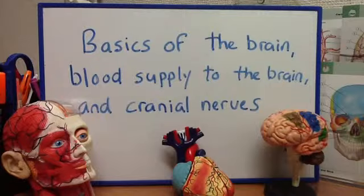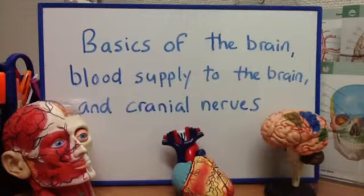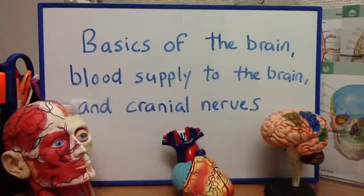Moving on to number seven: the bony arch at the outer border of the eye socket is formed by the union of the temporal process of the zygomatic bone and the zygomatic process of the temporal bone. What do we call this? This is the zygomatic arch.